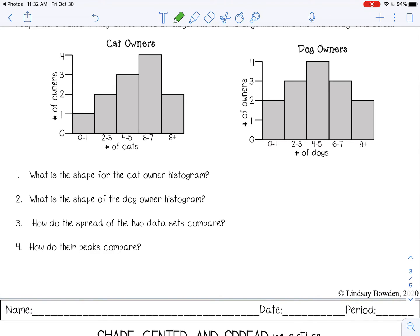So what is the shape for the cat owner histogram? So we have this long tail on the left, which means it's skewed left. So wherever the tail is, that's how it's skewed.